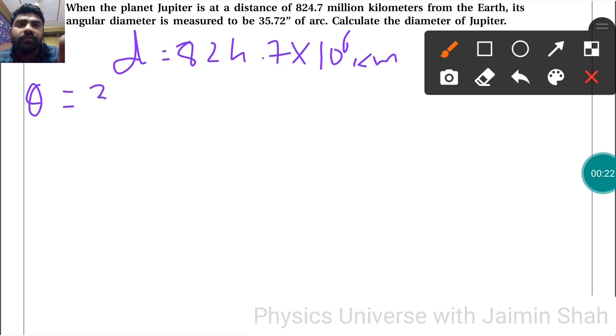θ is equal to 35.72 seconds of arc. Calculate the diameter of Jupiter. So, the angle θ is equal to...